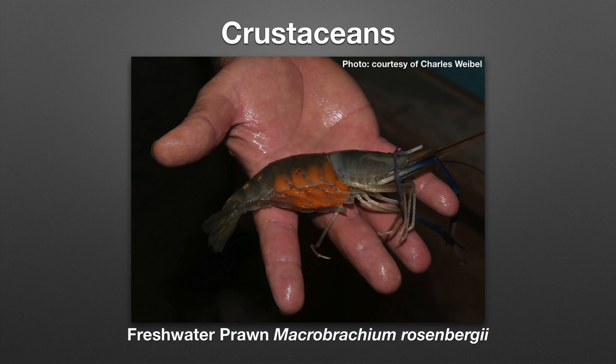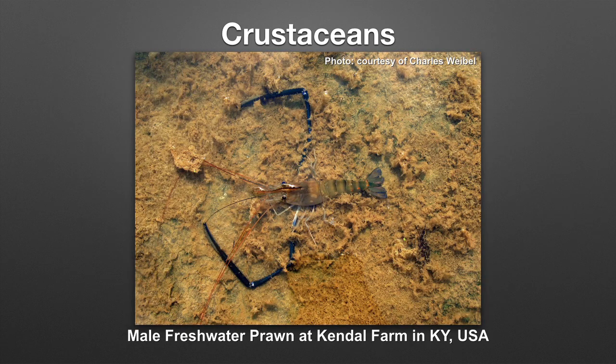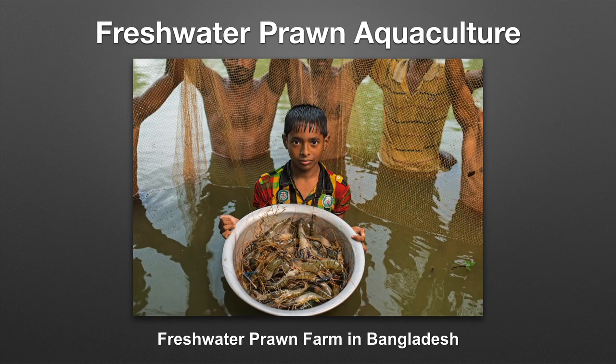Another major aquatic organism cultured globally is crustaceans. Here you see a freshwater prawn — this is a female, and the orange area represents the eggs she is holding. This is a picture of a male freshwater prawn in Kentucky, USA, and this represents a harvest of freshwater prawn in Bangladesh.